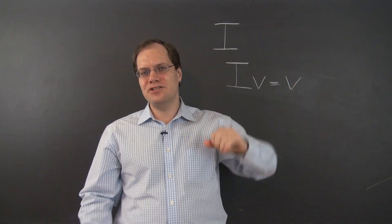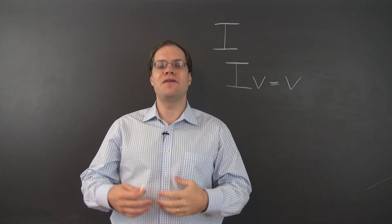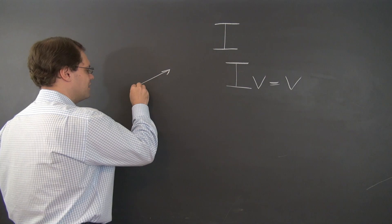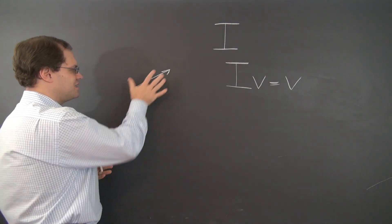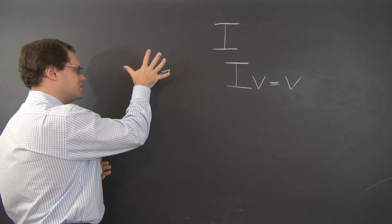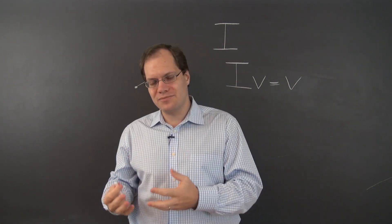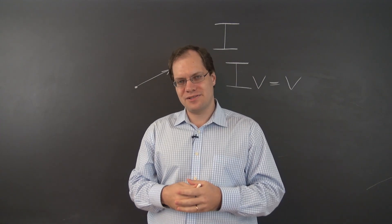But in any case, you can consider the identity transformation on any vector space. If you consider it on the space of geometric vectors, then this is the transformation that does nothing at all. Whatever the input vector is, that's the output vector. On the space of polynomials, whatever polynomial comes in, that's the polynomial that comes out.